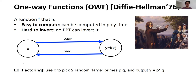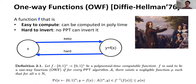A famous example of a one-way function candidate is based on the factoring problem, where we use the input x to pick two large random primes p and q and simply output p times q. Since we believe factoring a product of two large primes is hard, this function is believed to be one-way. More formally, f is a one-way function if given a random n-bit string x we compute y = f(x), and for any PPT algorithm A the probability that A on inputs 1^n, y finds a pre-image is at most a negligible amount.